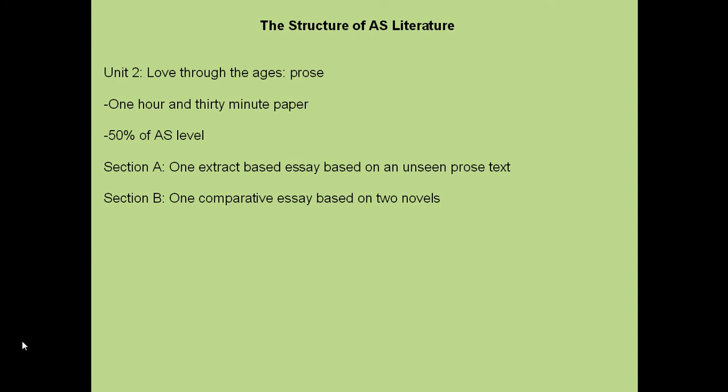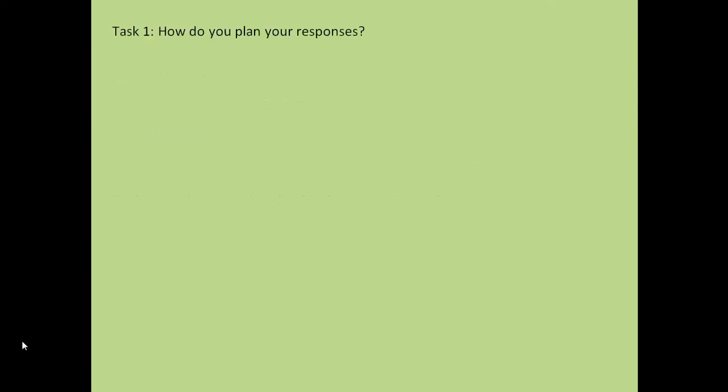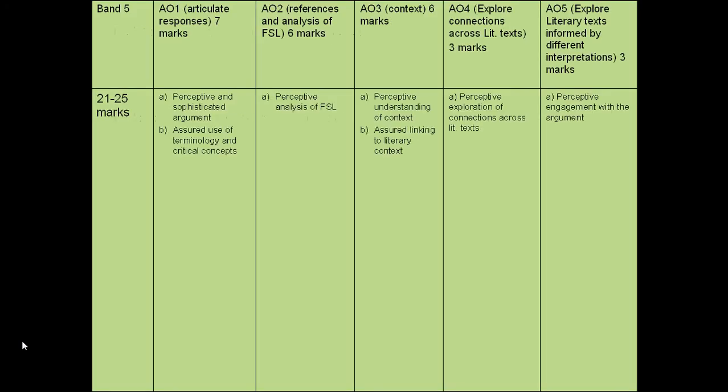Section B is one comparative essay based on two novels. A couple of questions for you — which we'll explore in the next series of videos: one, how do you plan your response, and two, how do you write the perfect response? So let's see if you've been revising. Pause this video now, note down, discuss, or however you want to do it — check that you have an understanding of exactly what you need to do for exams. When you're ready, press play to resume.